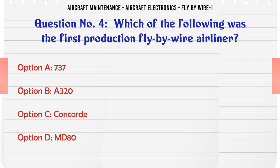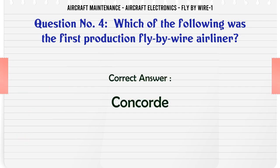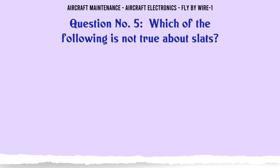Which of the following was the first production fly-by-wire airliner? A. 737. B. A320. C. Concorde. D. MD-80. The correct answer is: Concorde.